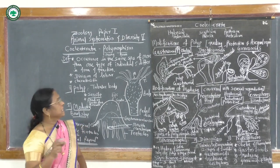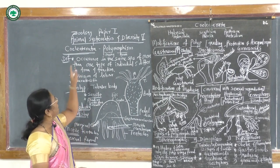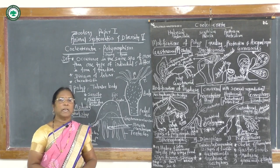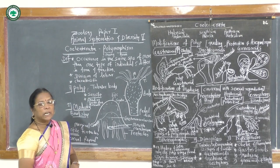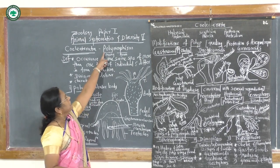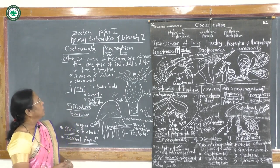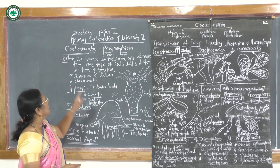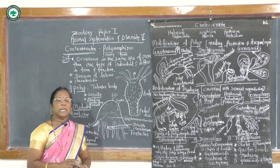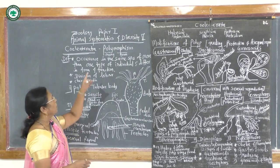Today our topic is polymorphism from zoology paper, animal systematics and diversity. First we will see the definition. In Greek, 'poly' means many and 'morphi' means form, so polymorphism means the occurrence of more than one type of individual in the same species, where there is division of labor and work is distributed among numerous forms.